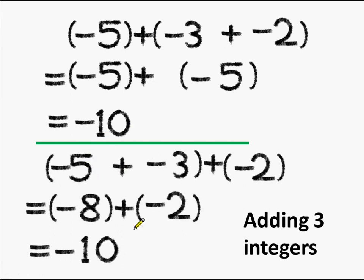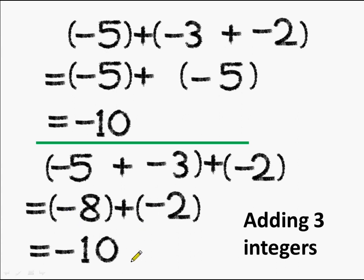Now let us change the order. First we add the group of minus 5 and minus 3, then add minus 2 to it. So minus 5 plus minus 3 becomes minus 8, and adding minus 2 gives 8 plus 2 equals 10. Putting the common sign minus, the answer is minus 10.